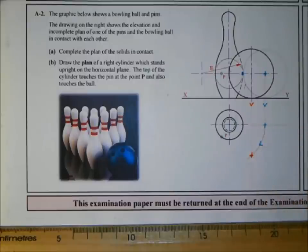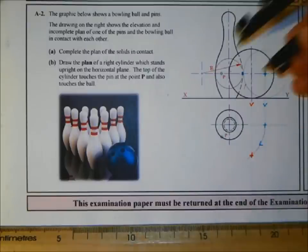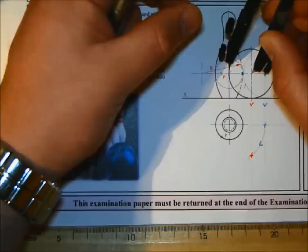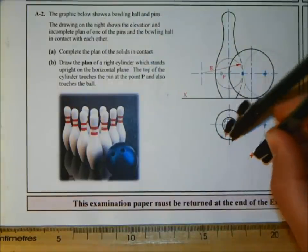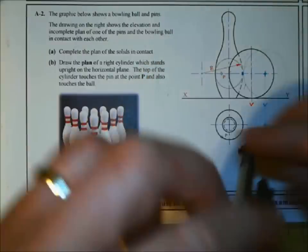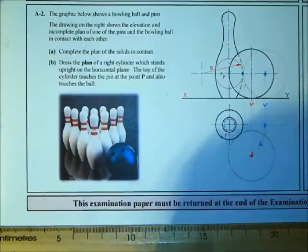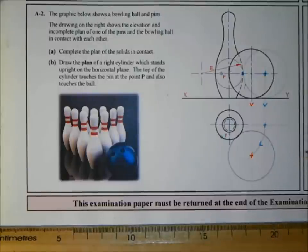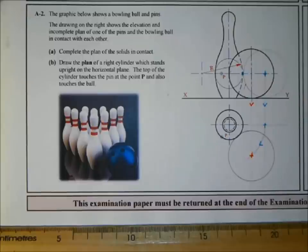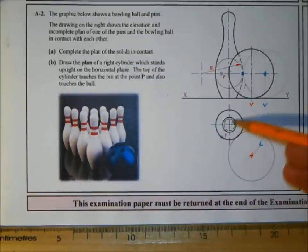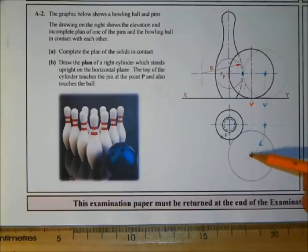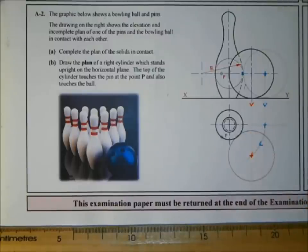The bowling ball always has the same radius, so take that radius from the elevation and draw it in — you will get the bowling ball in plan. Just holding off drawing it in strong to check Part B first. If it were a sphere sitting on the ground, the plan is a circle. The question doesn't ask for the point of contact, but if you did need it, you join the two centers together — the point of contact is where the two circles meet, touching dead center, not overlapping.